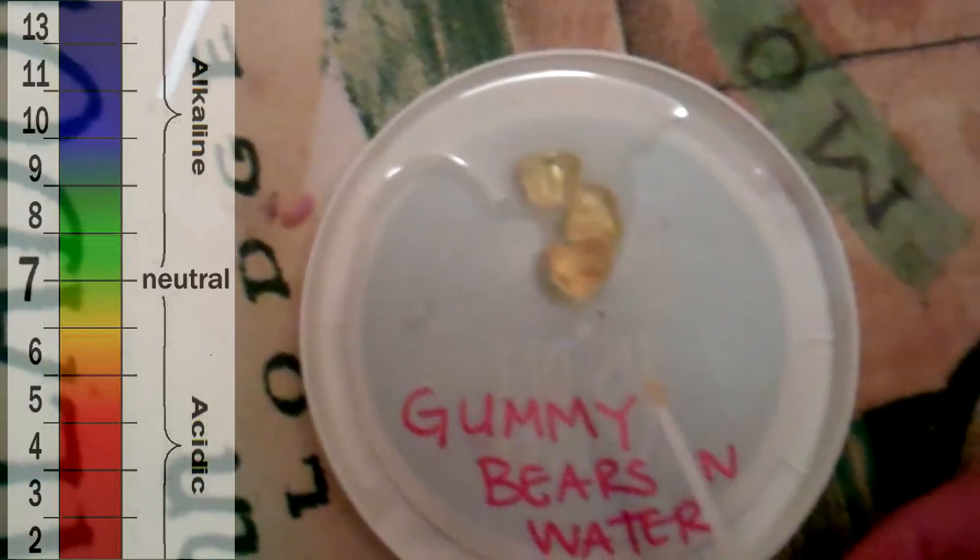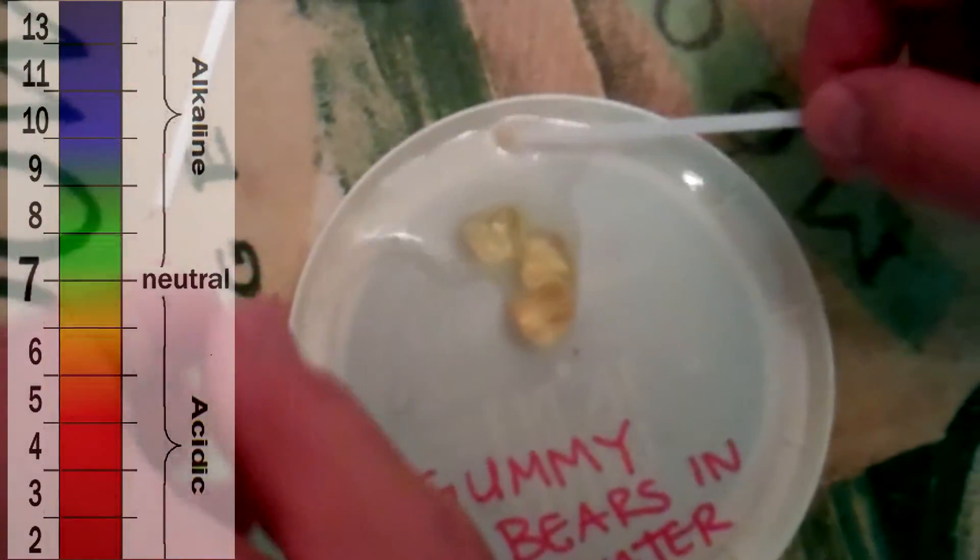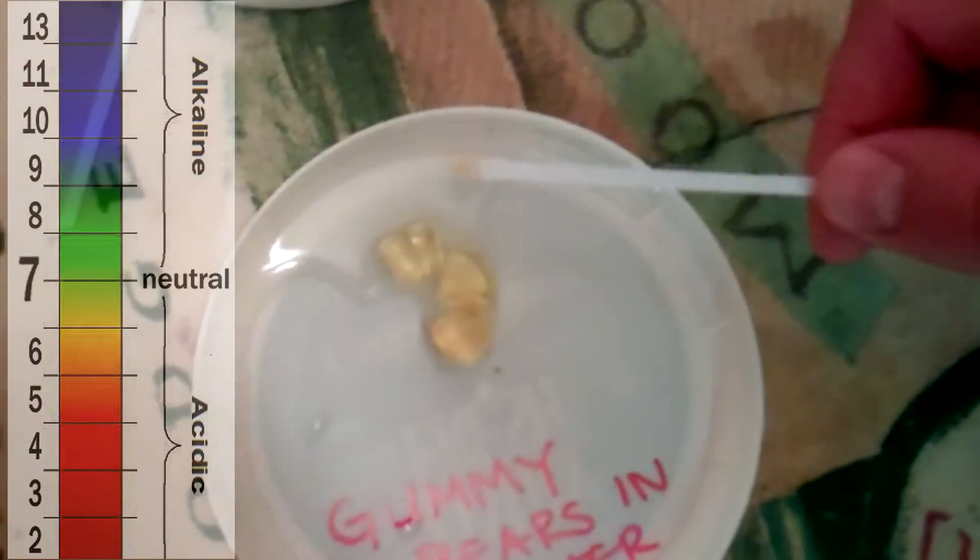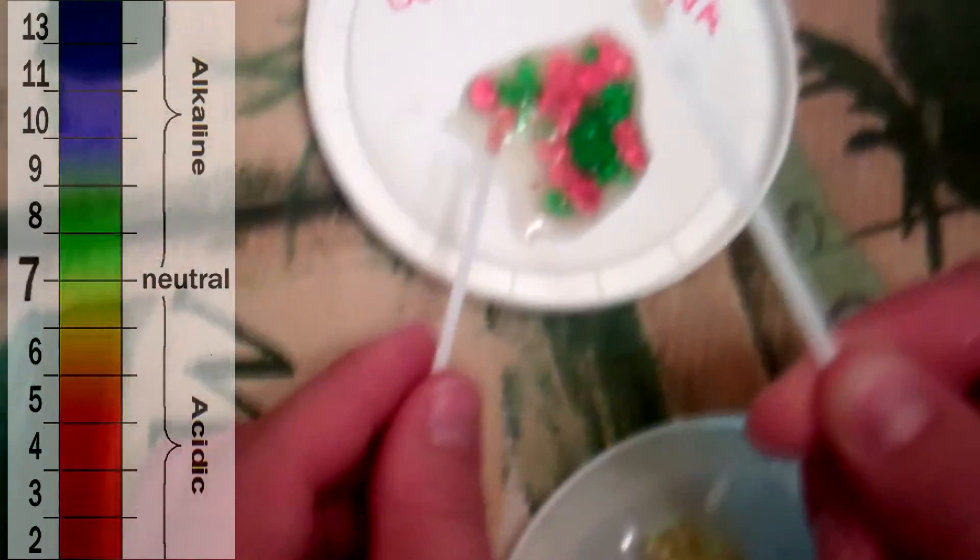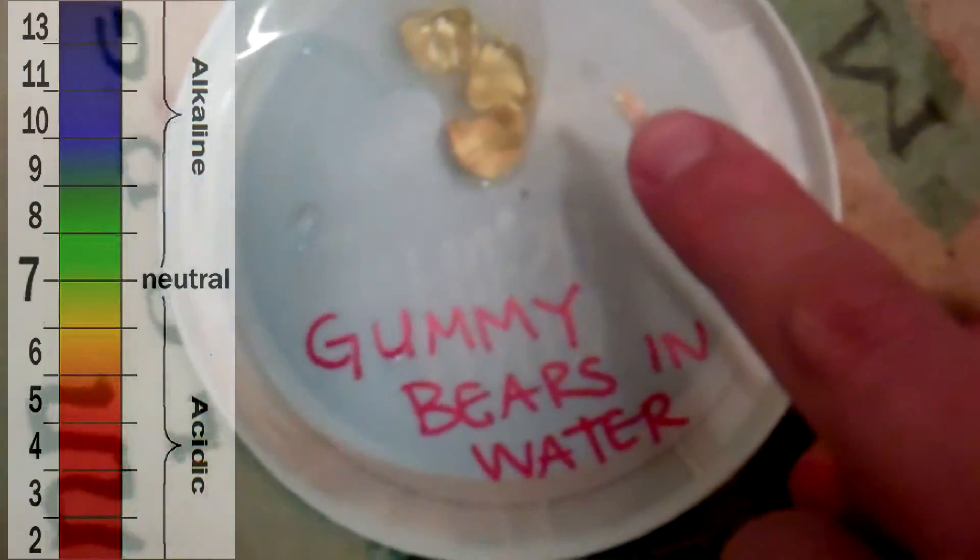Then we did some gummy bears. We put our gummy bears in water. And gummy bears aren't in and of themselves acidic like the apple juice was. But gummy bears, this is gummy bears in water. This yellow down here, this is gummy bears in water right there. You see that yellow? It's barely barely showing up.